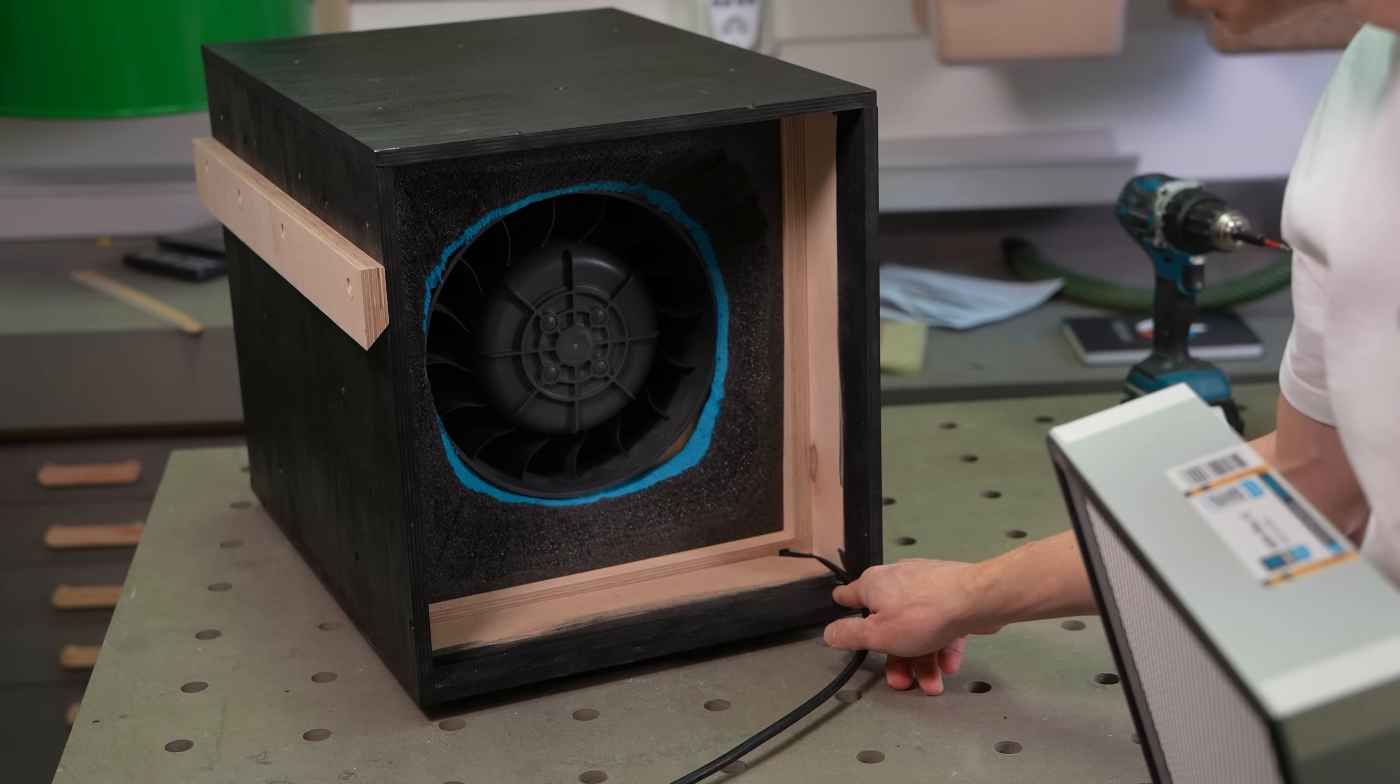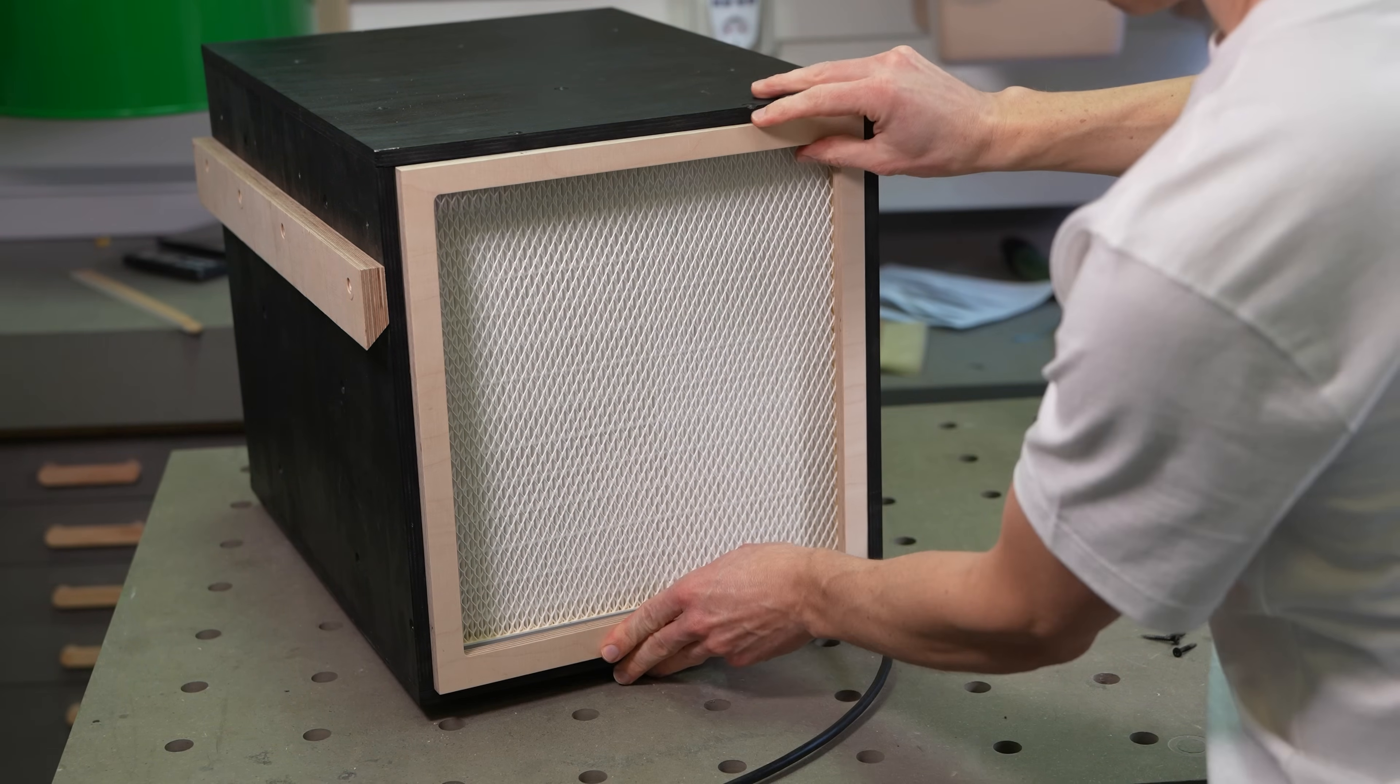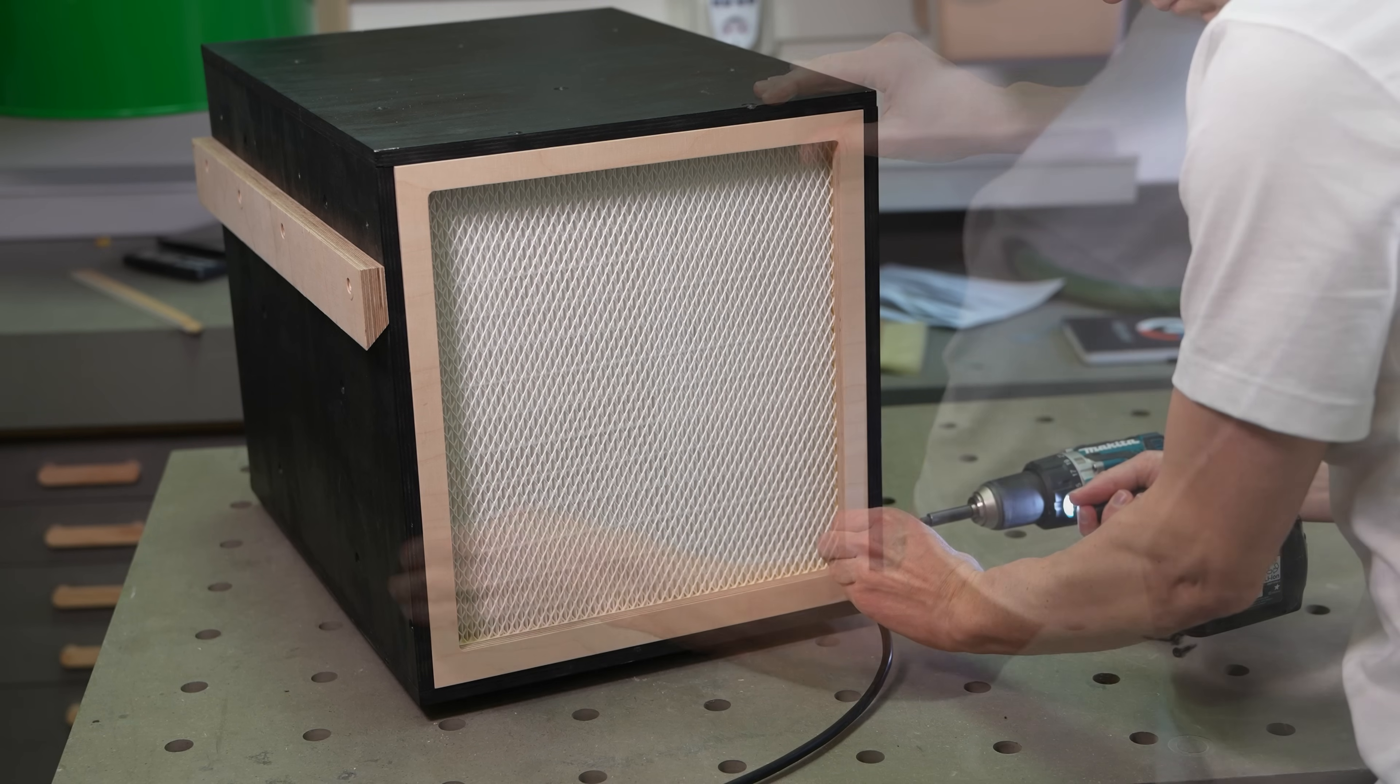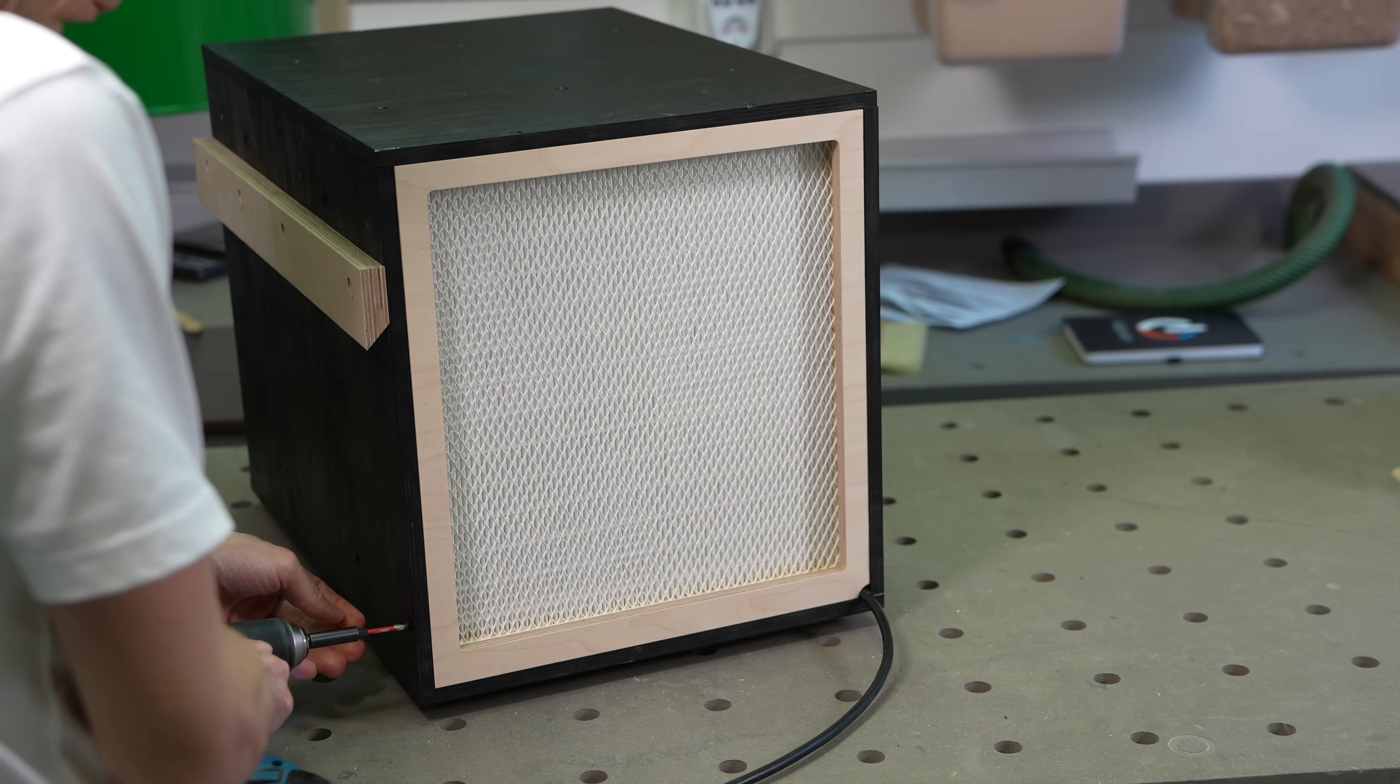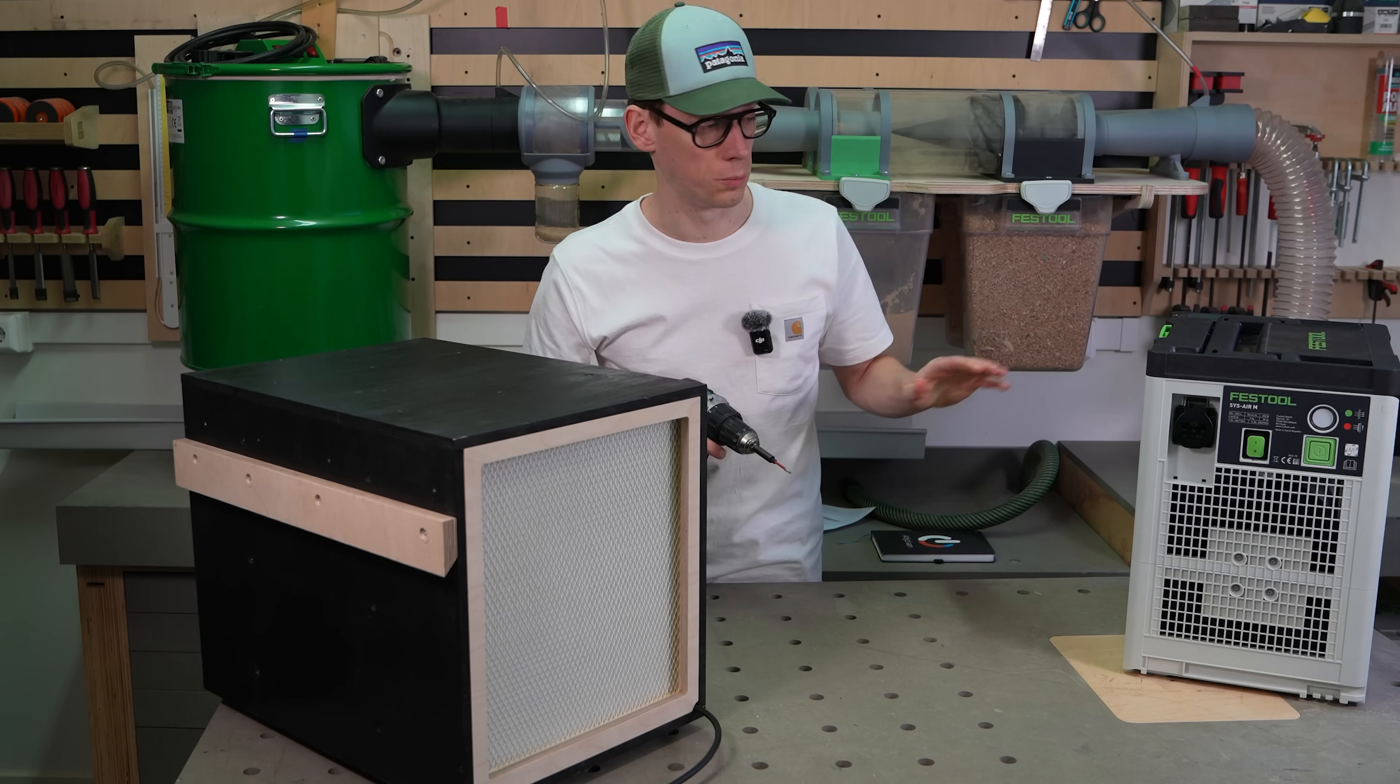Two wood screws on the top keep it all in place. The electrical cord goes out to the back of the box, and since the HEPA filter isn't removed often, I just screw it into place. Now that this is complete, I'm very curious how it performs compared to the Festool.